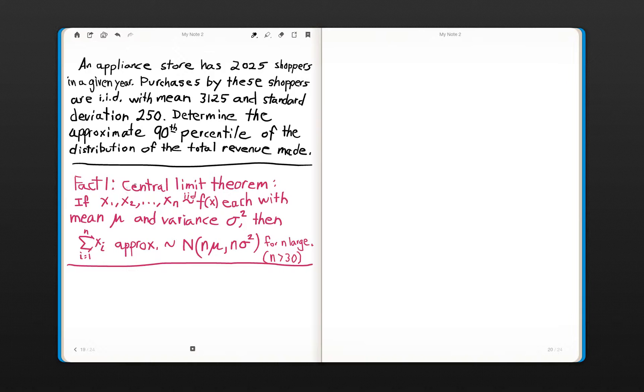What the central limit theorem tells us is that the distribution, this sum is a random variable, is actually approximately normally distributed with the parameters that we just discussed.